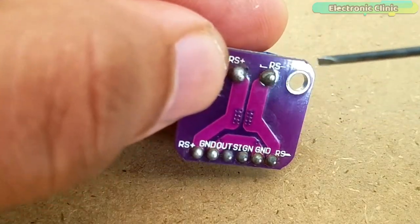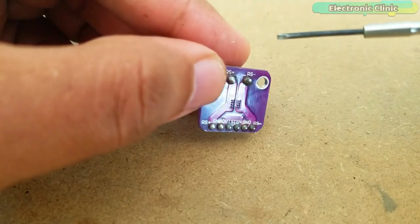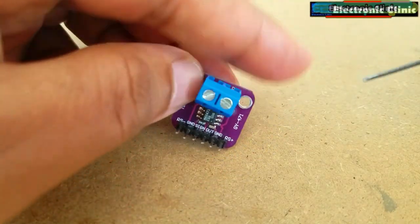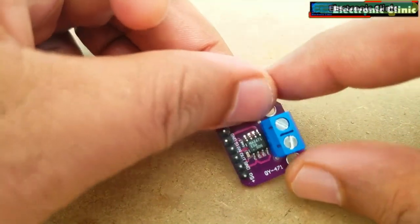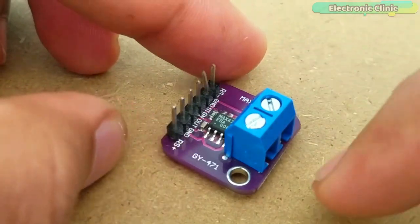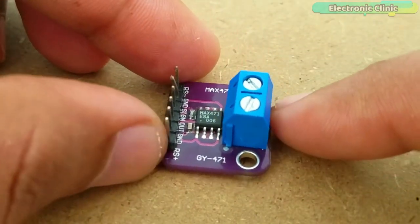The sign pin will actually tell which way the current is flowing. In battery powered operation it actually gives us an indication of discharge and charging feature. Number four, out pin. This is the voltage output pin.